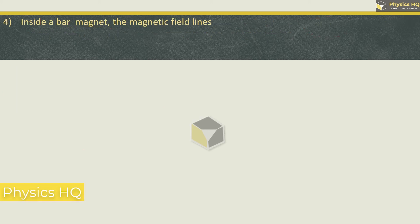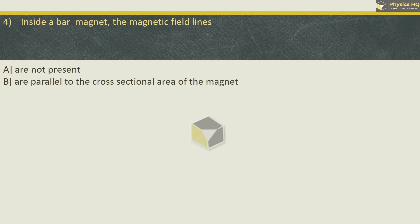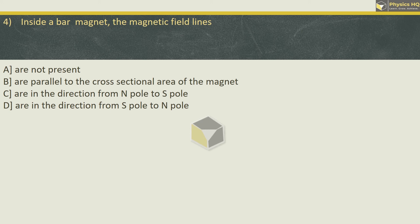The magnetic lines are not present, or parallel to the cross sectional area, or in the direction north to south pole, or in the direction from south to north pole. Now let me tell you this. If you have this bar magnet, this is north pole and this is south pole. So magnetic lines of force, they start from north pole and they go to the south pole in this way. This is outside the bar magnet.